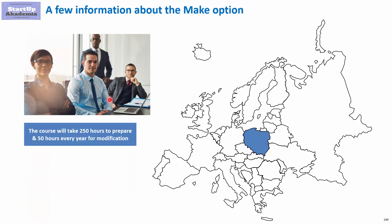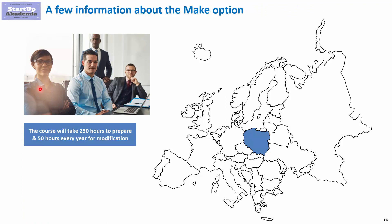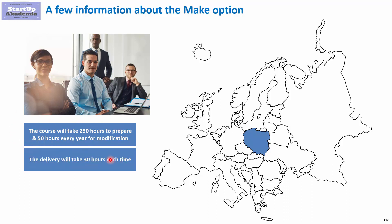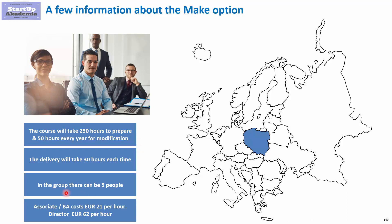A few things we know about the make option: the course will take 250 hours to prepare, and on top of that, 50 hours every year for modification. The delivery will take 30 hours each time, and in one group you can have five people. The associate BA costs roughly 21 euro per hour, whereas the director can be estimated at 62 euro per hour.